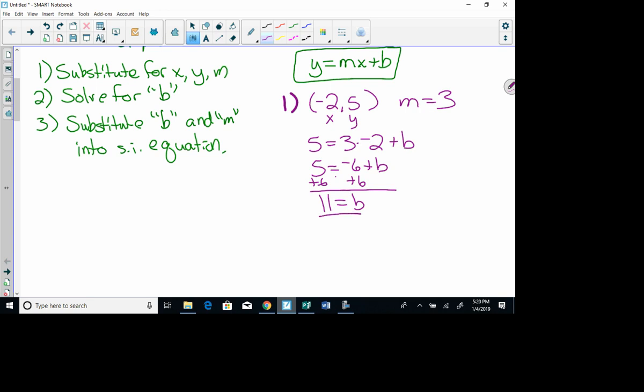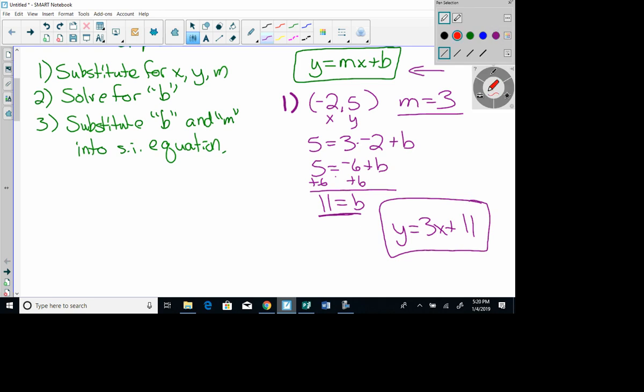Step 3 says substitute b and m into the equation. So I'm going to write y equals m is 3, x plus b is 11. So here is my answer right here. Okay, let me do another one. Number 2, I'm going to change colors again.